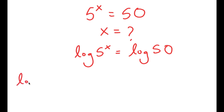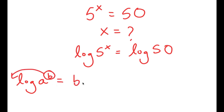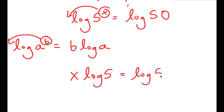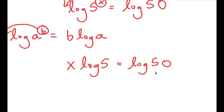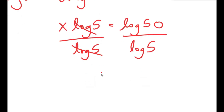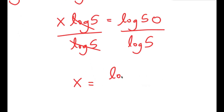If I have something in the form log of a to the power of b, I can move b to the front, so this turns into b times log a. In this case, I have log of 5 to the power of x, so I can move x to the front. So I get x times log 5 is equal to log 50. From here, I'm going to divide both sides by log 5, so these two cancel out, and I get x is equal to log 50 over log 5.